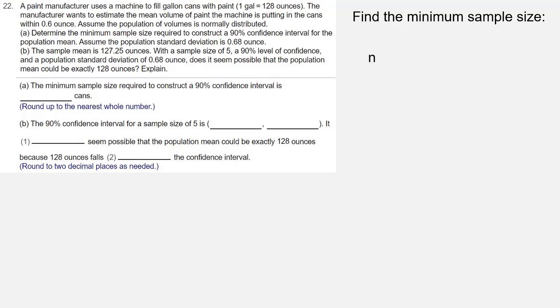In the minimum sample size formula, we have n equals Zc times sigma over E squared. With a 90% level of confidence, the Zc value is going to be 1.645.